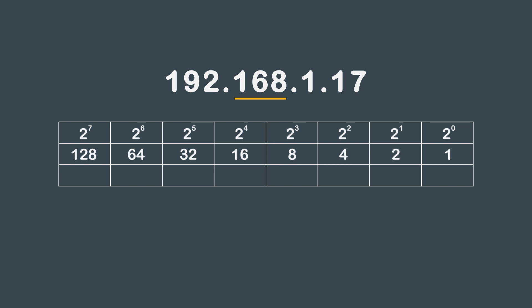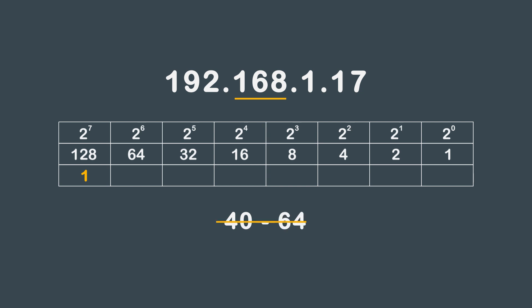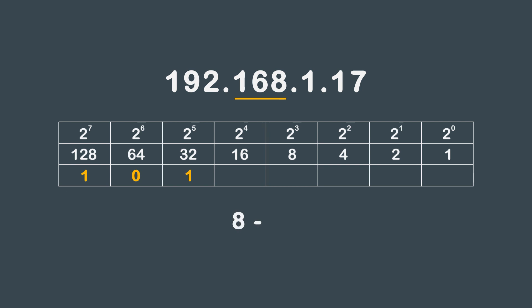The second octet is 168. Again we subtract the largest value first: 168 minus 128 gives us 40, so we place a 1 in the 128 block. You cannot subtract 64 from 40, so you place a 0 in that block. You can subtract 32 from 40 and you get 8, so we place a 1 in the 32 block. 16 is too large to subtract from 8, so we put a 0 in that block. We take 8 from 8 for the next block, so we put a 1 in the 8 block. Since all the numbers are used, we fill the rest of the blocks with 0.